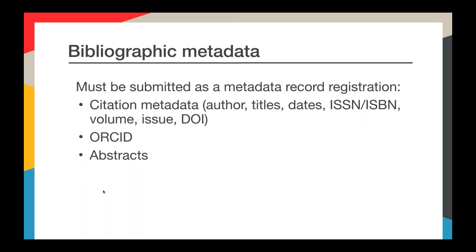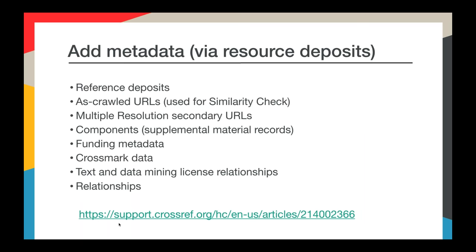A bibliographic metadata record includes citation metadata such as author, title, ISSN, and other details used when citing an item. It also may include ORCIDs for authors, as well as JATS-formatted abstracts. These are both optional, but we strongly recommend them. This metadata is used to identify the items being registered. It's also distributed to third parties and is used to look up your DOIs so that people can link to your content, so it's very important that that information be supplied to us and that it's accurate.